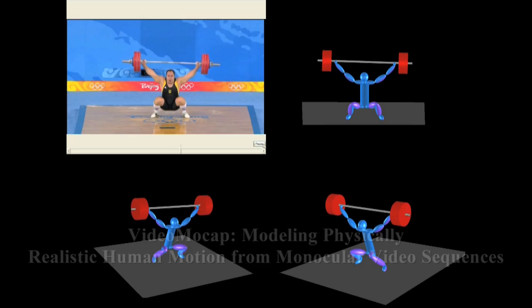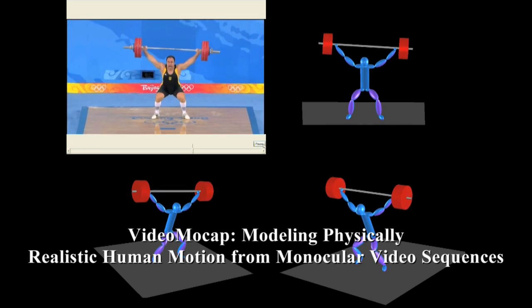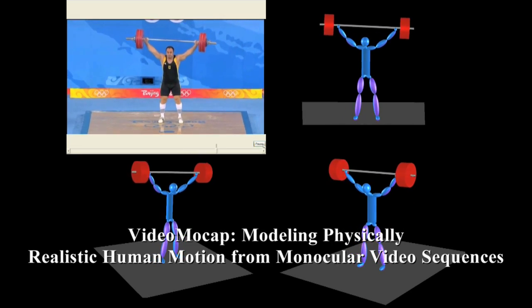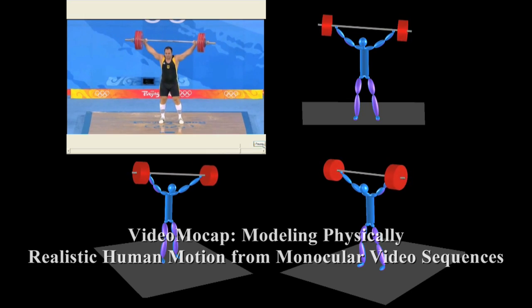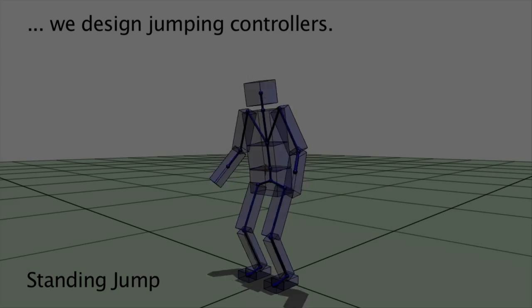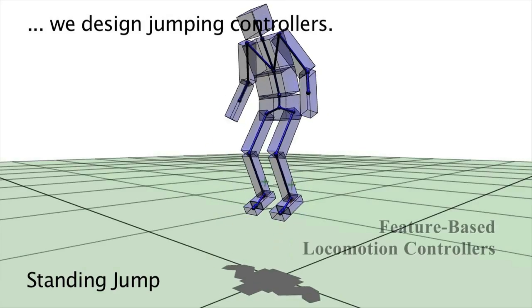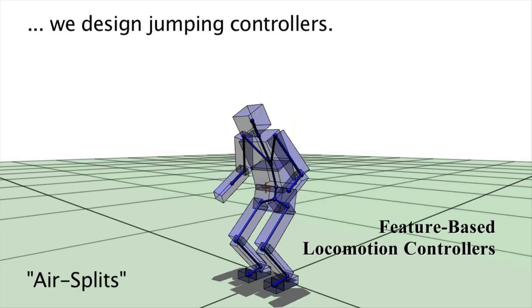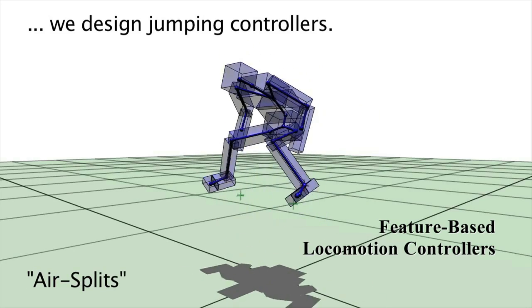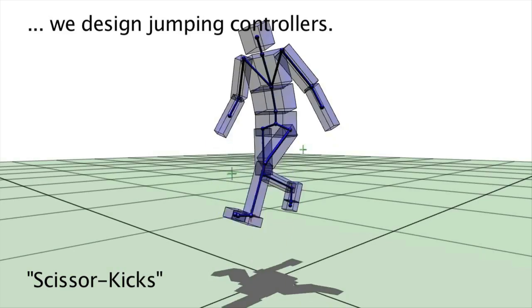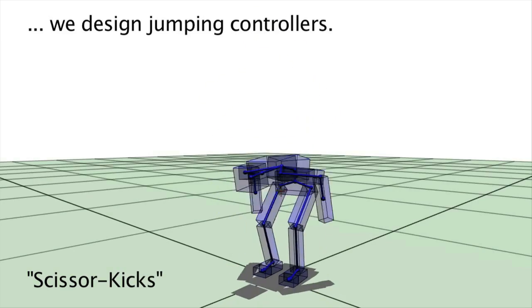As for animation, this motion modeling system generates physically realistic human motion from monocular video. New character controllers produce balanced jumps based on high-level features of human movement.